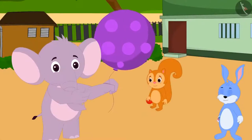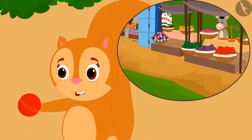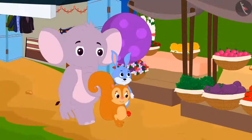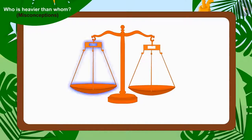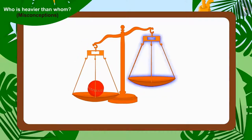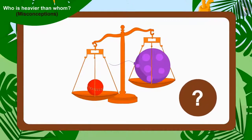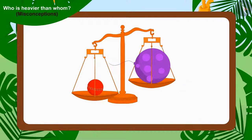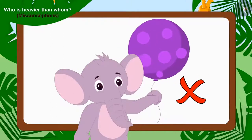Let's see how the three friends found out the truth in Appu's statement. Chanda noticed a weighing balance at Bola's vegetable stall and suggested they measure the weight of their toys. Chanda placed her cricket ball on one plate and Appu's balloon on the other. Can you tell whose toy is heavier? The plate with Chanda's cricket ball dipped downwards — this means Chanda's cricket ball is heavier than Appu's balloon, so what Appu said is not right.